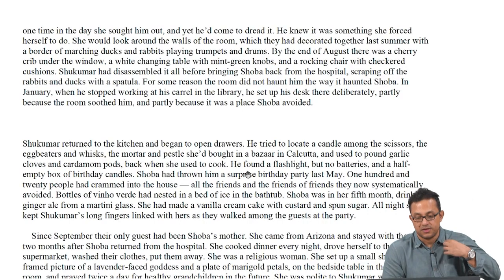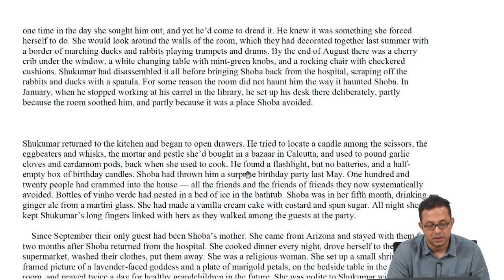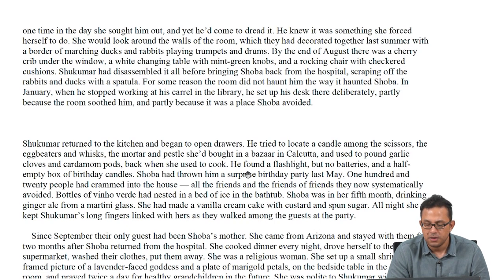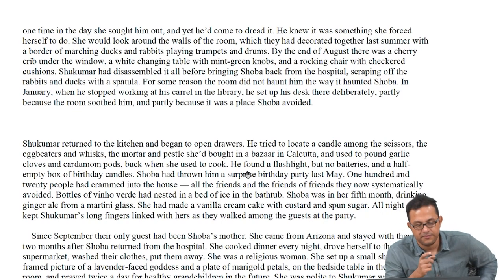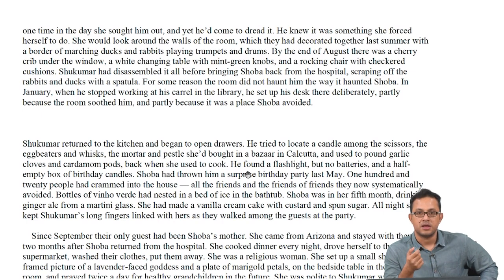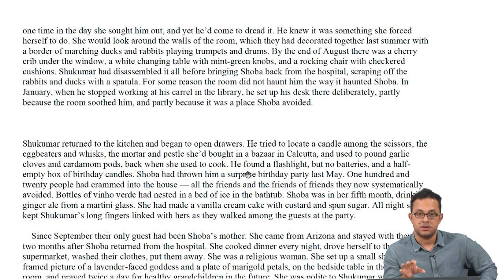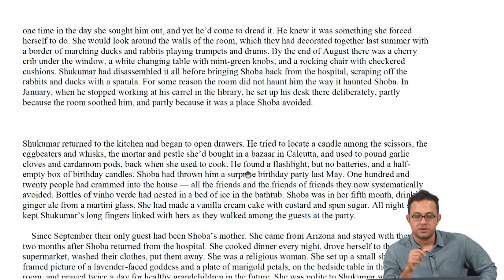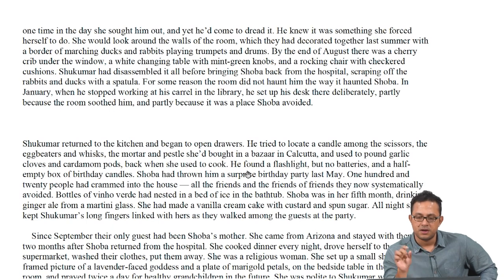Shukumar returned to the kitchen and began opening drawers, trying to locate a candle among the scissors, egg beaters, and whisks. He found the mortar and pestle he had brought from a bazaar in Calcutta, used to pound garlic cloves and cardamom — back when she used to cook. The mortar and pestle, bought in a Calcutta bazaar and now sitting in a drawer in Boston, becomes a metonymic object that has travelled across time and spaces — the way the diasporic imagination keeps connecting back to the past.